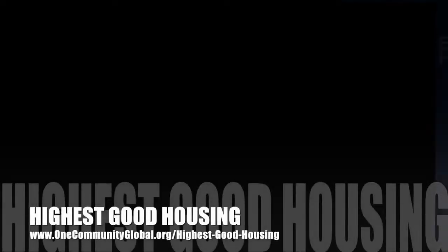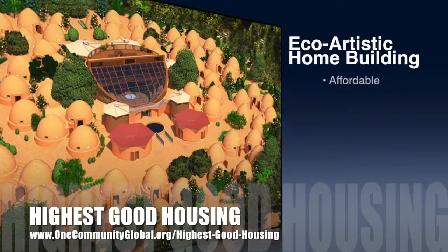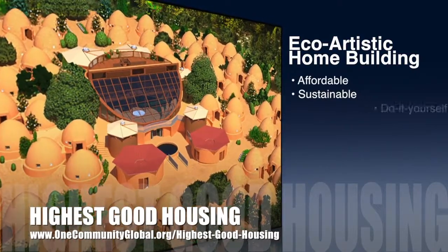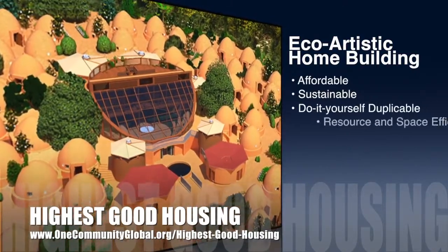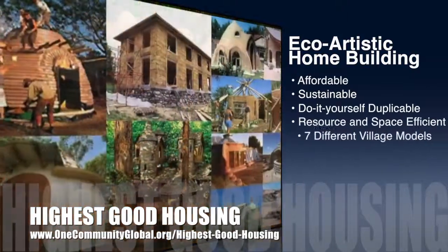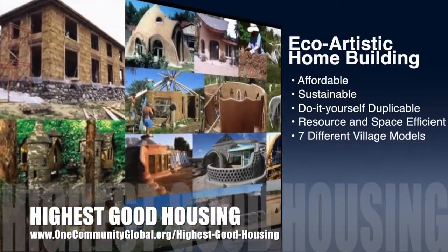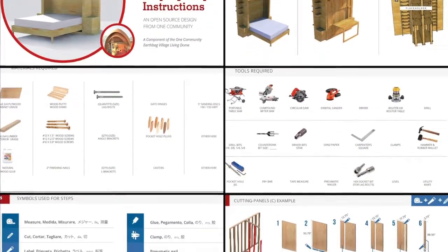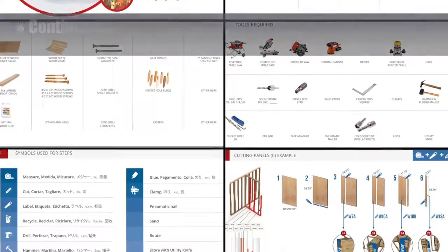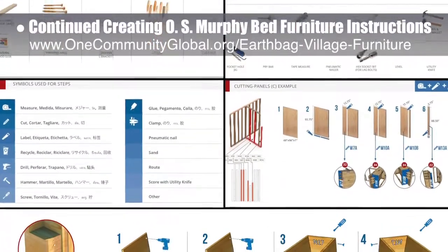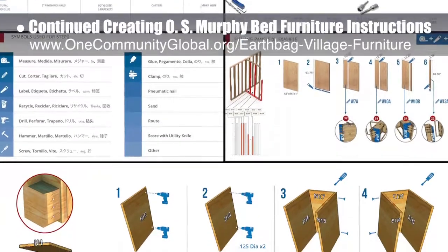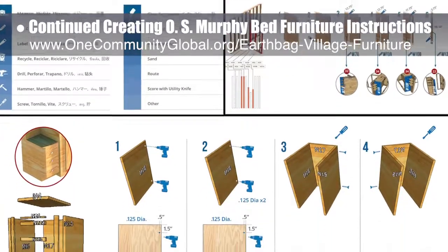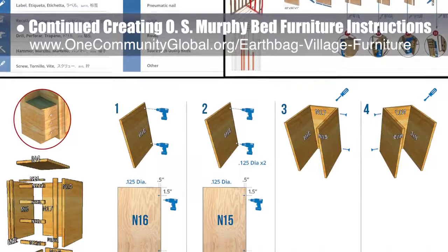The One Community approach to highest good housing is eco-artistic home building that is affordable, sustainable, do-it-yourself duplicable, resource and space efficient, and consists of seven different sustainably constructed village models. This week, the core team — which includes the pioneer members plus those helping who don't wish to be individually acknowledged — continued creating the open-source Murphy bed furniture step-by-step instructions. As shown here, we revised the layouts, added new pages, new icons, and new photos.